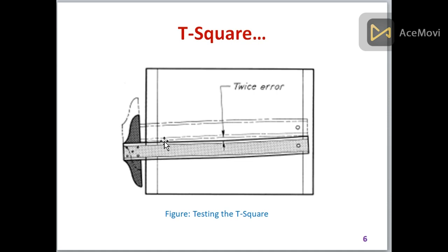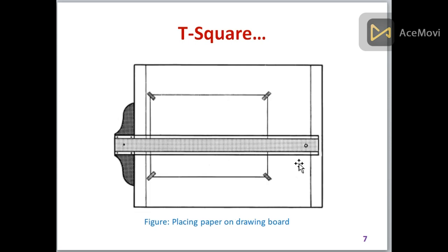This is also an error - a twice error. First you make a line, then you make the same line again but there is some up and down. This is because you have made a mistake by displacing your T-square.